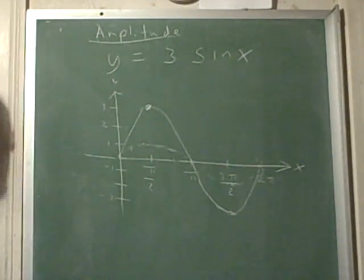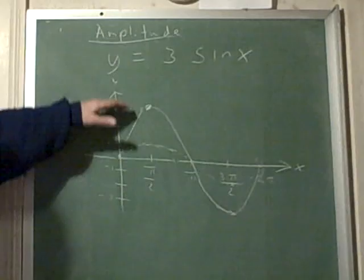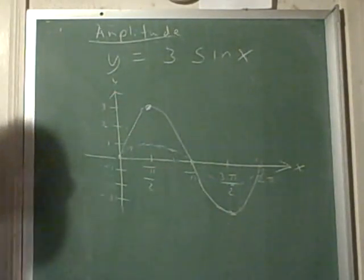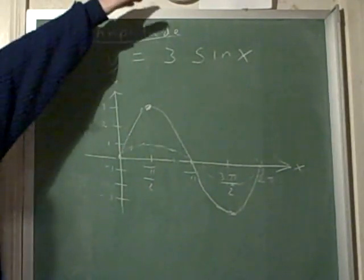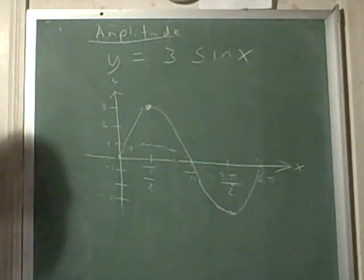So it looks like the same sine wave, only it goes up as high as three and down as low as negative three. Had it been five sine of x, it would go up as high as five and down as low as negative five.